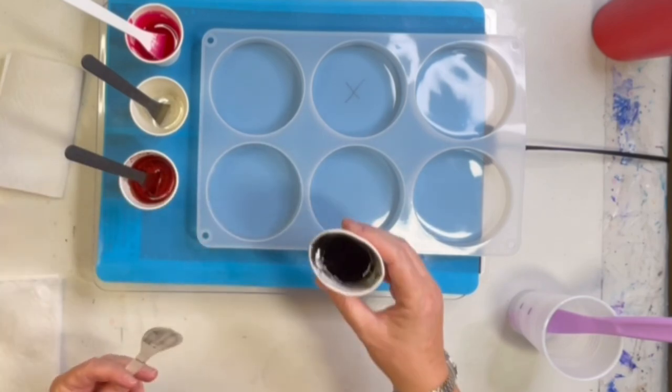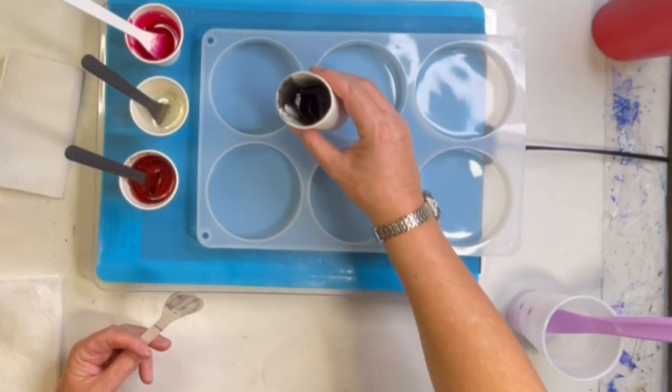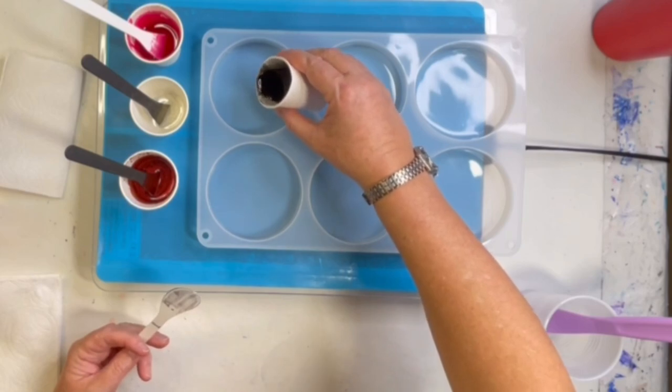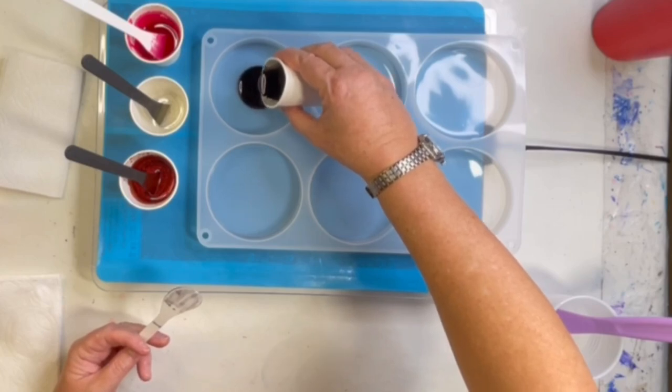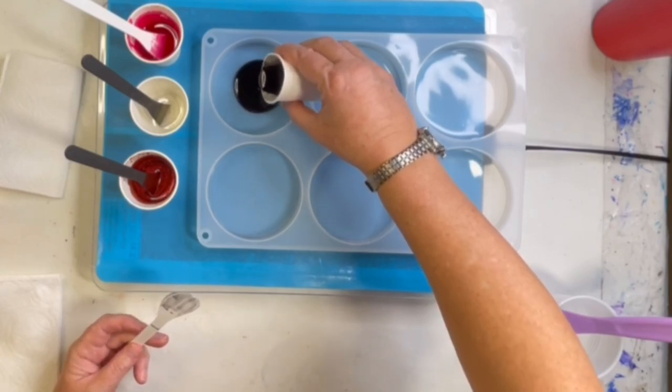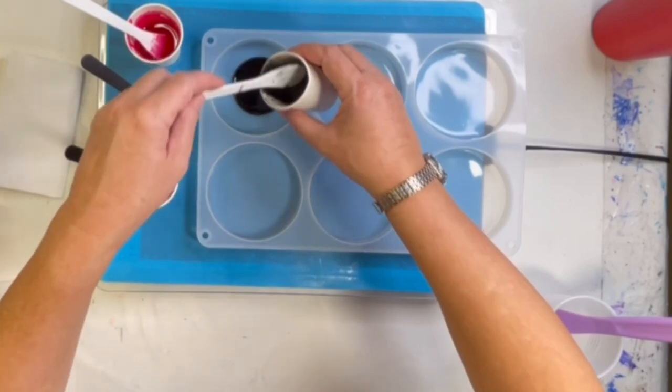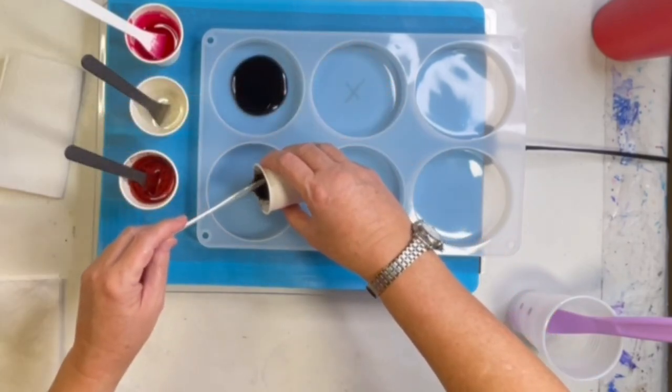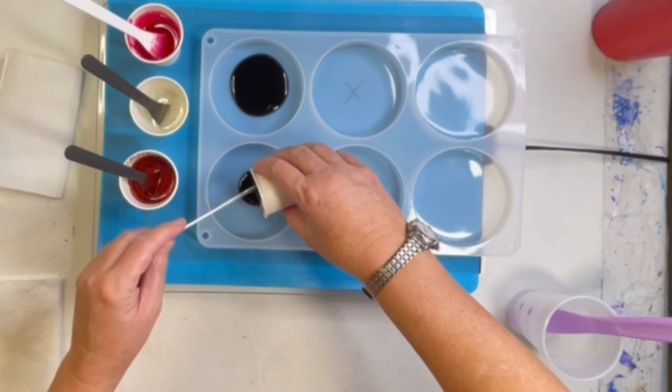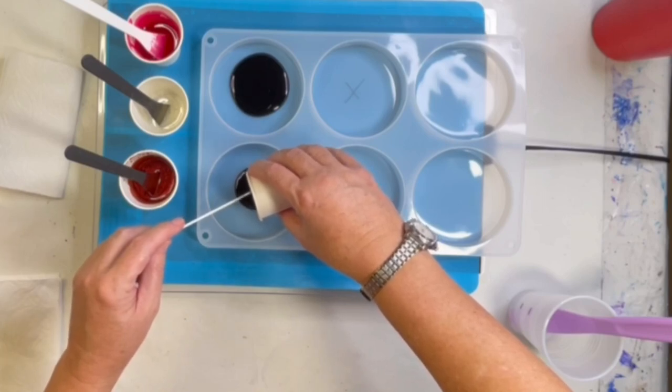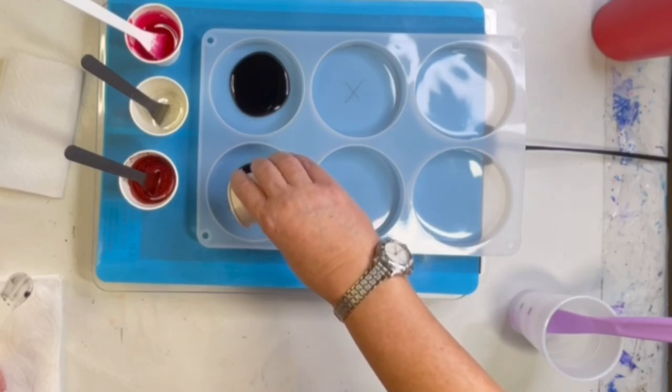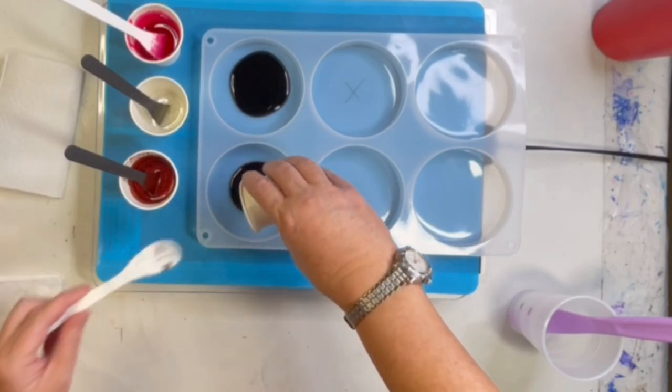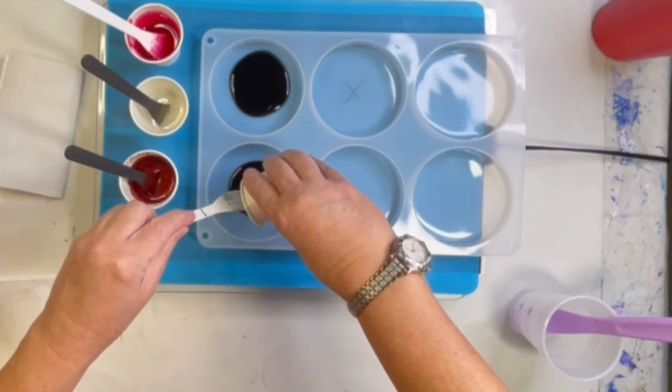So I'm going to do the black puddles first. Let's see how we go this time. Also, I let my resin get to 90 degrees and then I decanted immediately. It does take a little while to get all your pigments mixed up and your inks mixed up.